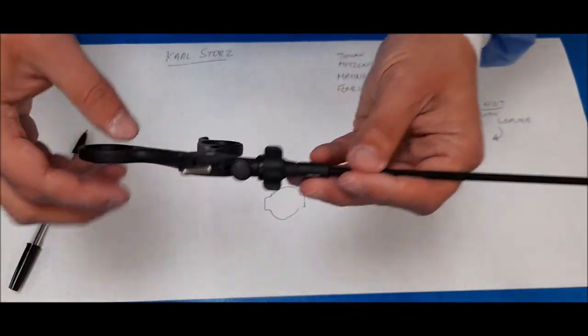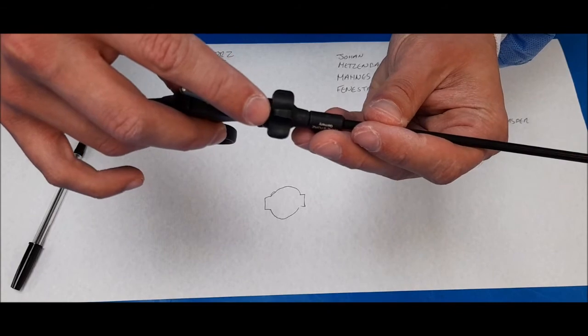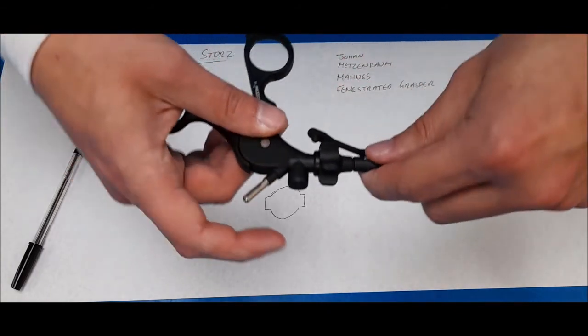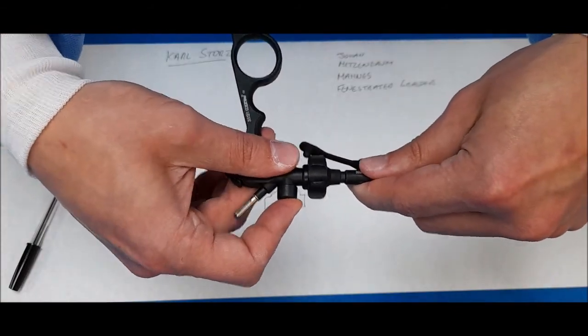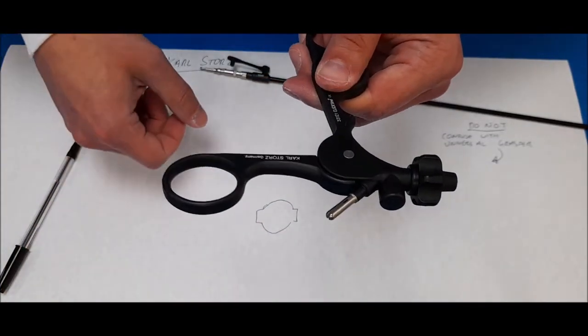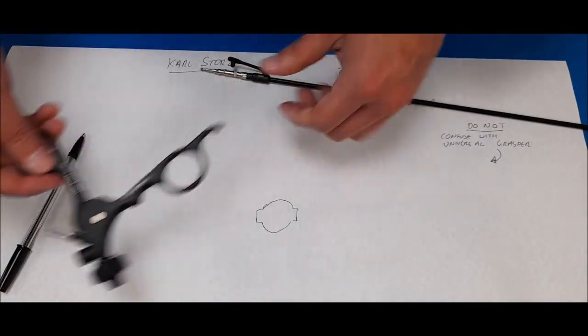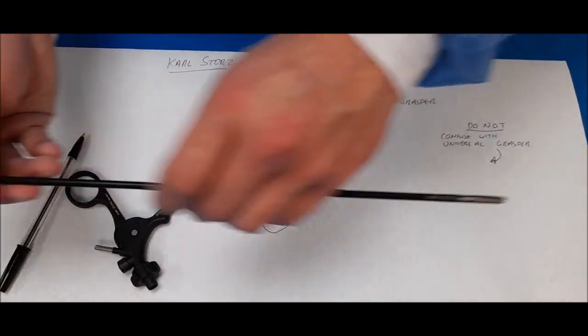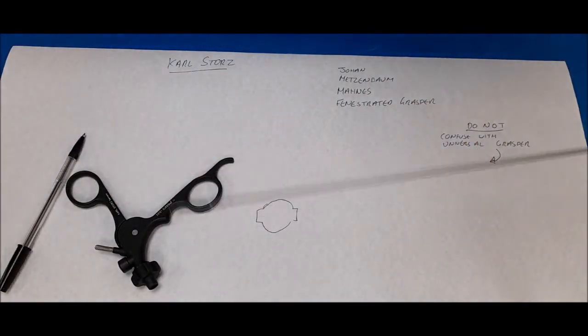To disassemble, you just press this button and pull the sheath out. Again, the handle adjusts itself to allow release. Then it is just as simple as rotating and pulling out.